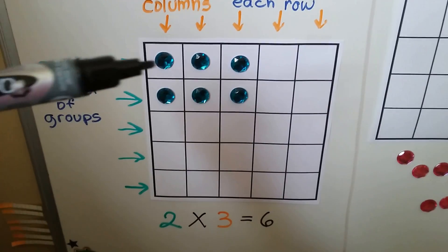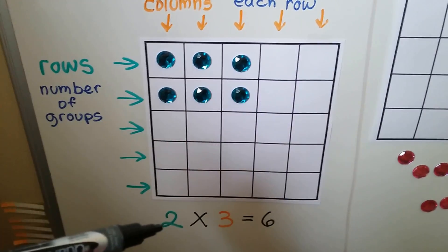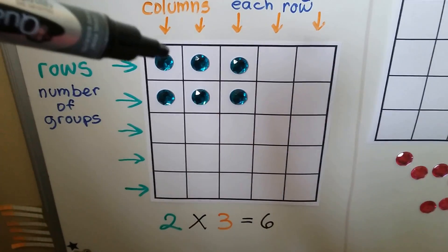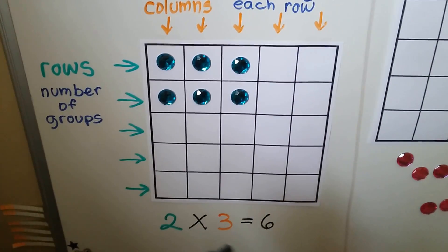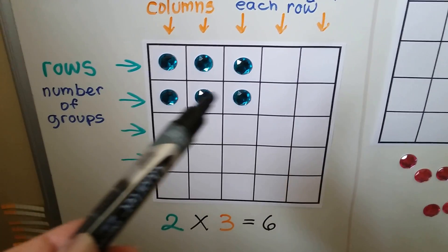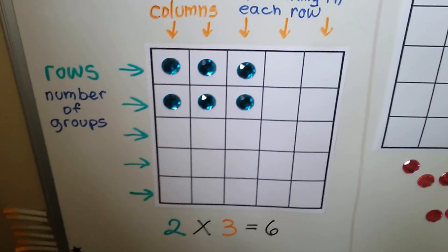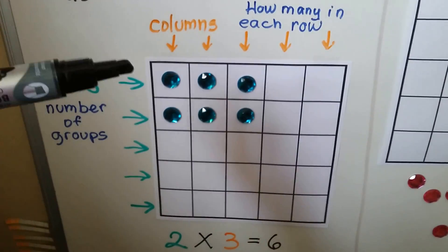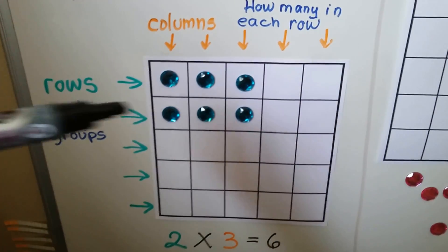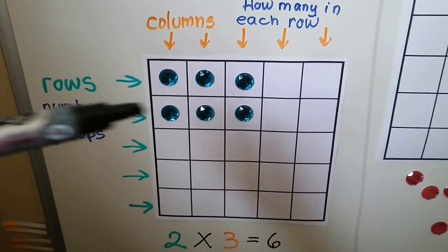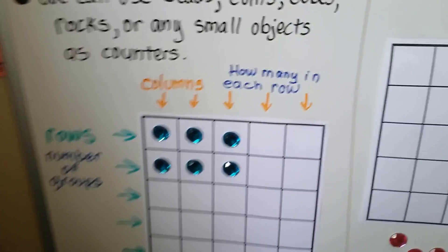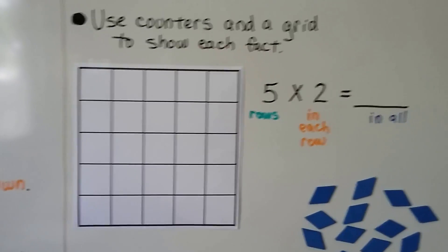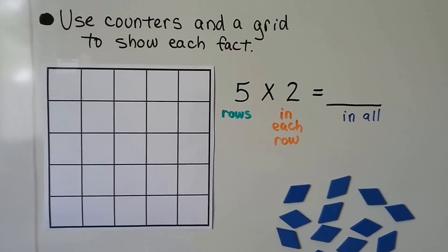Here we have 2 rows, so we have a 2, and there are 3 in each row. So we have 2 times 3, and that equals 6. We can see there's 3, 4, 5, 6 here. So remember, going across is the groups — it's the rows. We can use counters and a grid to show each fact.